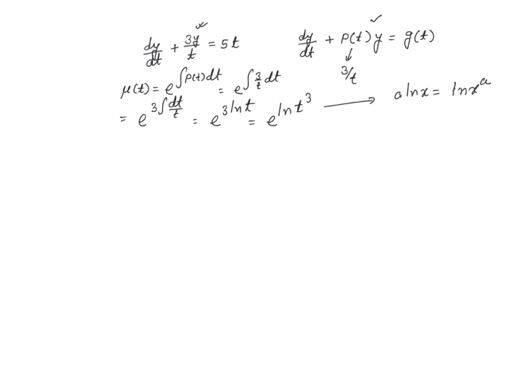Now, the exponential and natural log, they are inverses of each other. So these two are going to cancel each other out because they are inverse functions. So that gives me μ(t) equals nothing but t cubed.